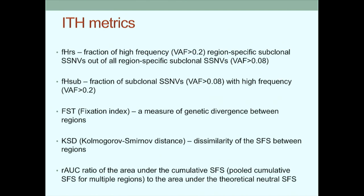We derived site frequency spectrums from which we obtained different metrics of intratumor heterogeneity and defined several new metrics. One is the fraction of high-frequency region-specific events out of all region-specific subclonal SNVs. We also use Wright's F statistic or fixation index as a natural measure of genetic divergence between regions. Additionally, we compute the Kolmogorov-Smirnov distance to compare site frequency spectra between regions, and the RAUC - the ratio of the area under the cumulative site frequency pooled across samples relative to that from the theoretical neutral SFS.